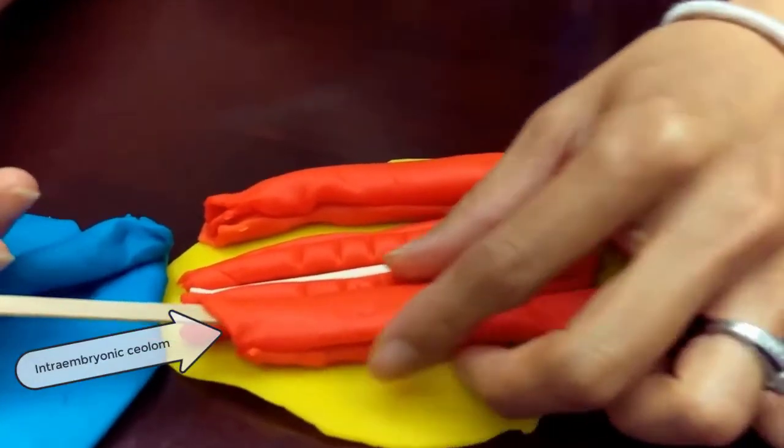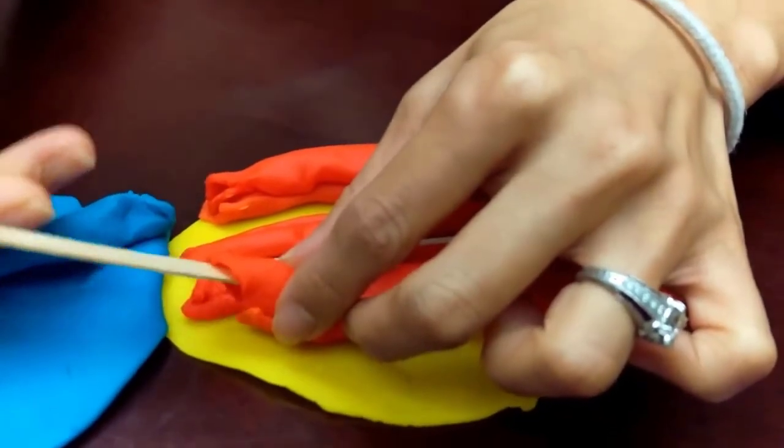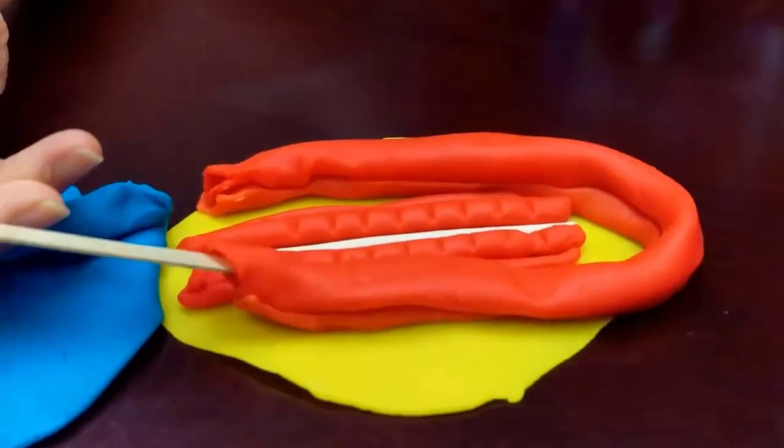So this space is the intraembryonic coelom, also known as the intraembryonic body cavity. That'll give rise to the pericardium, pleura, and peritoneum.